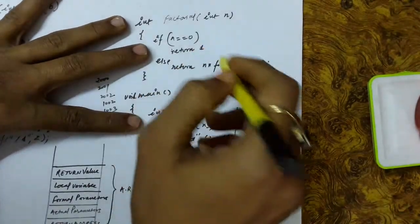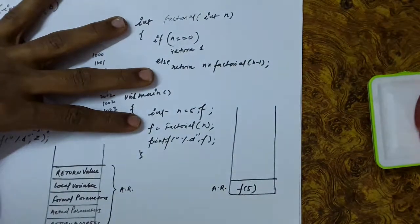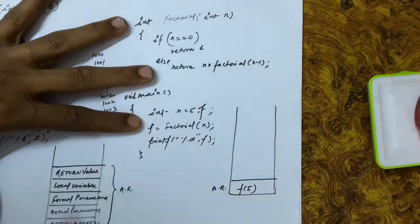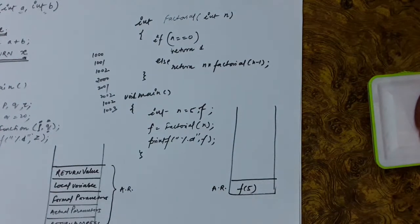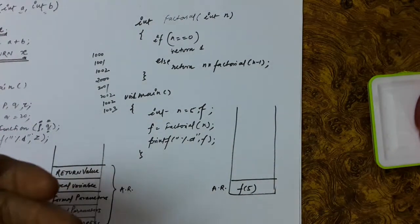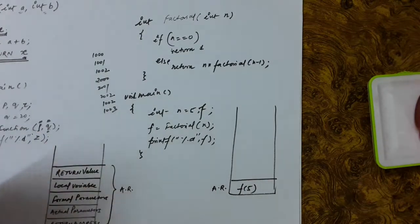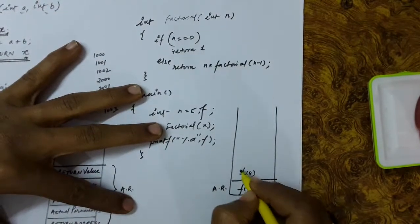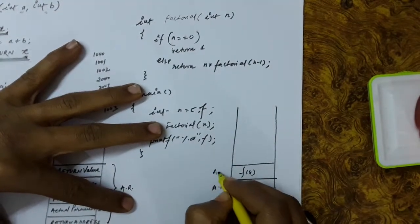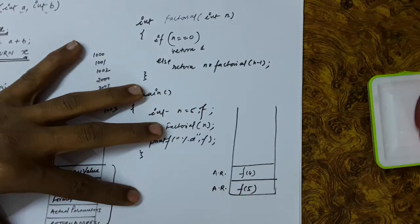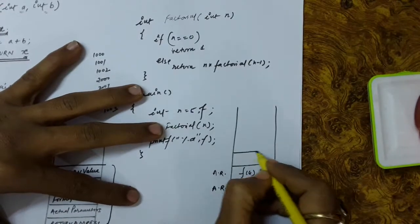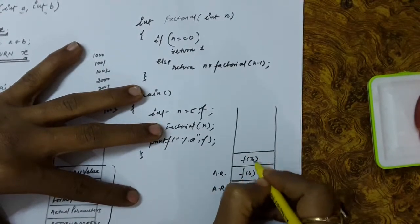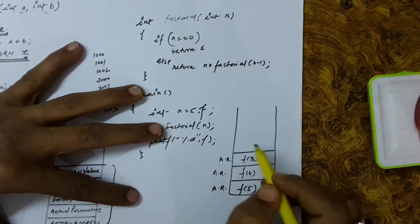Inside factorial 5, you can see that factorial 4 will be called. Before the situation of factorial 5 is resolved — before the actual value to be returned in factorial 5 is known — we are calling factorial 4. Factorial 5 is not resolved here. So inside that, we have called the function factorial 4. The activation record of factorial 4 will also be maintained here in this stack region. On top, we have factorial 4. Inside factorial 4, we will call factorial 3. It is not resolved yet, and we will store the activation record of factorial 3.